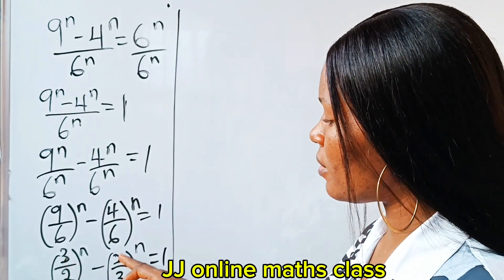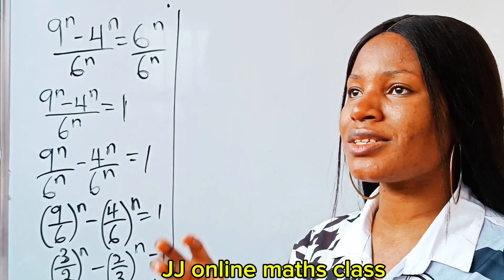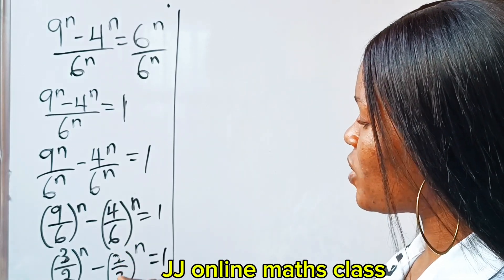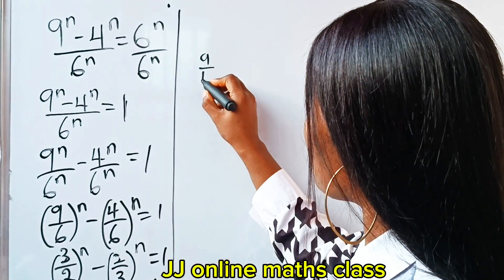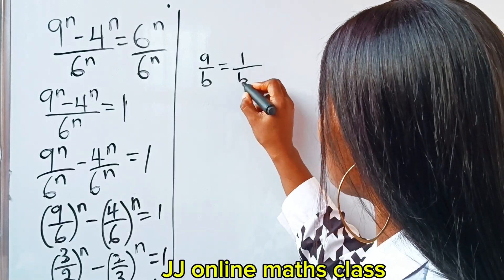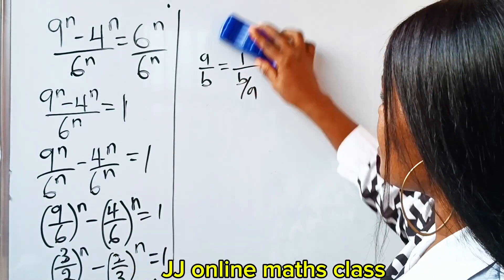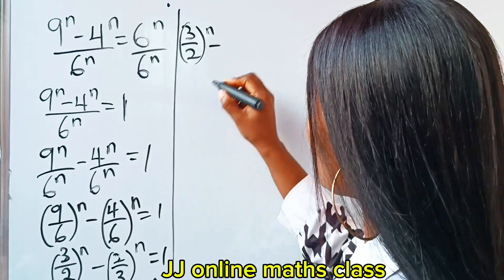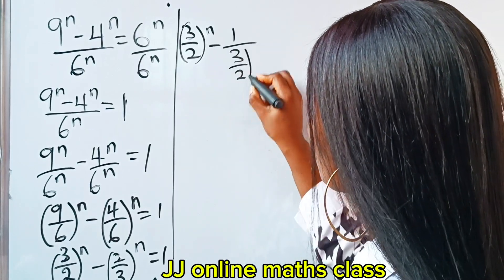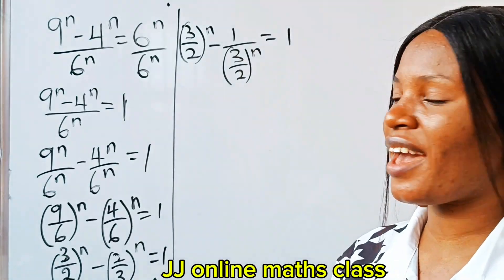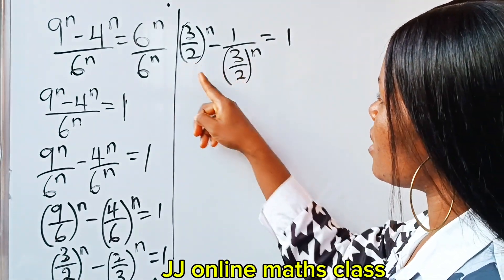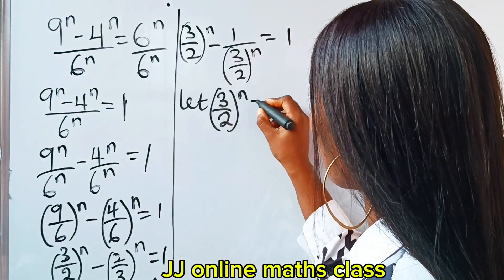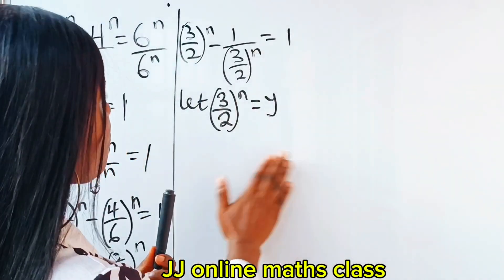Looking at this, there's something we can do to make both terms look the same. We can change (2/3)^n to 1/(3/2)^n, because a/b is the same as 1/(b/a). So we rewrite as (3/2)^n minus 1/(3/2)^n equals one. At this point we have the same base in both terms, so let's call (3/2)^n equal to y.